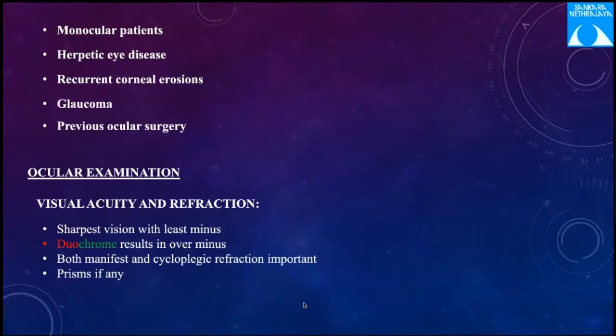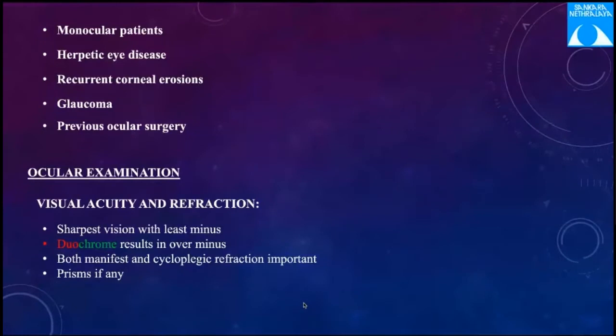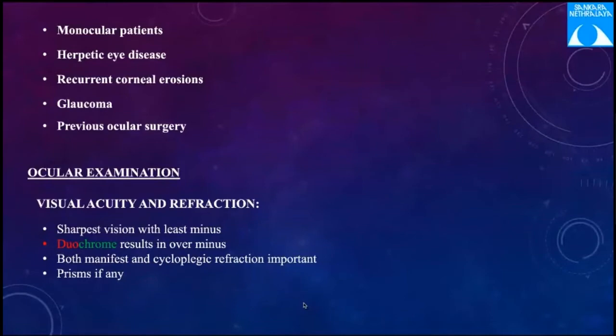Recurrent corneal erosion is not an absolute contraindication — for PRK it is not a problem, but for LASIK it is a no. After PRK, the Bowman's layer gets addressed, so epithelialization may be better. PRK is actually indicated in specific situations such as Bowman's dystrophy, where debridement is the mode of treatment, making PRK a helpful measure.